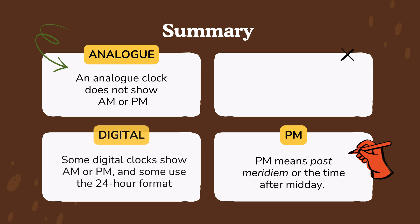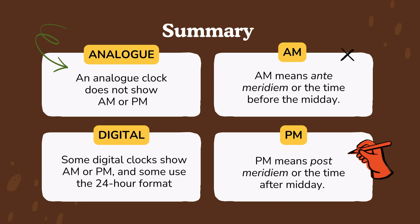Summary: An analog clock does not show AM or PM. Some digital clocks show AM or PM, and some use the 24 hour format. AM means ante-meridiem, or the time before midday. PM means post-meridiem, or the time after midday.